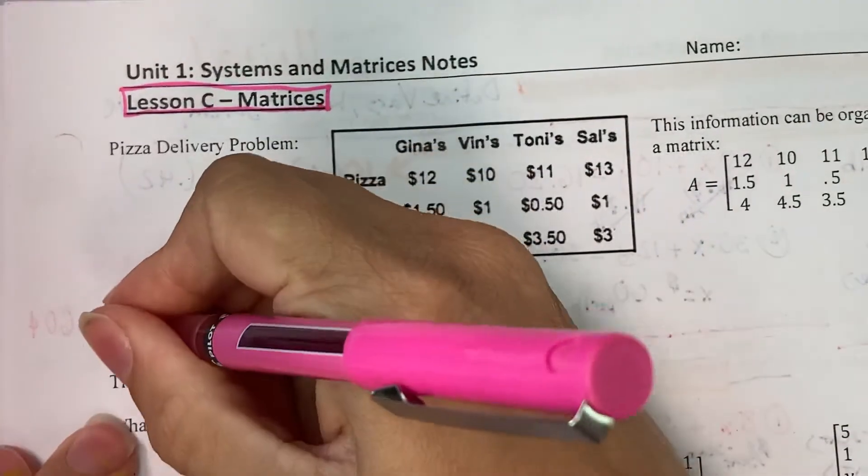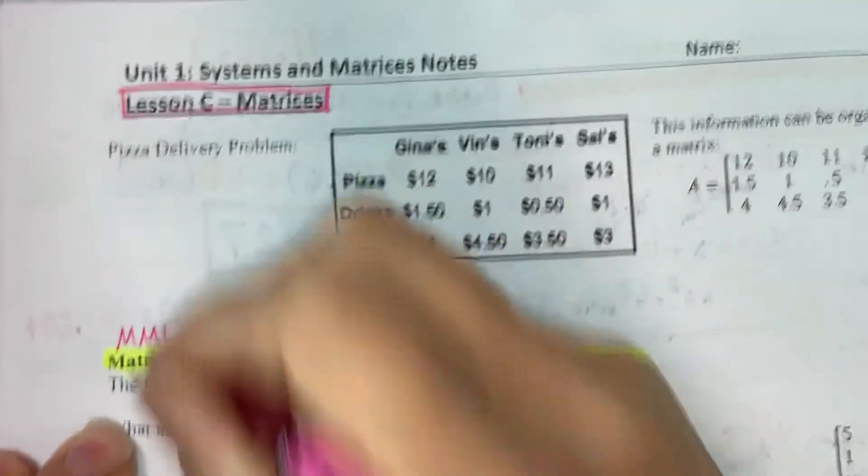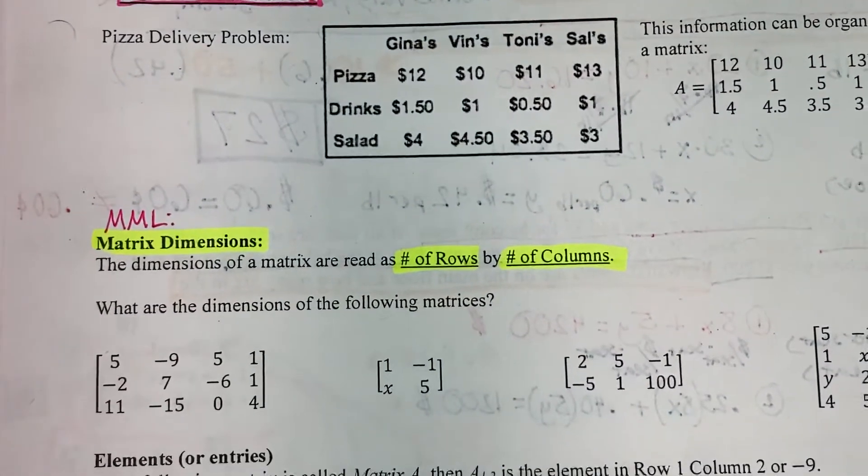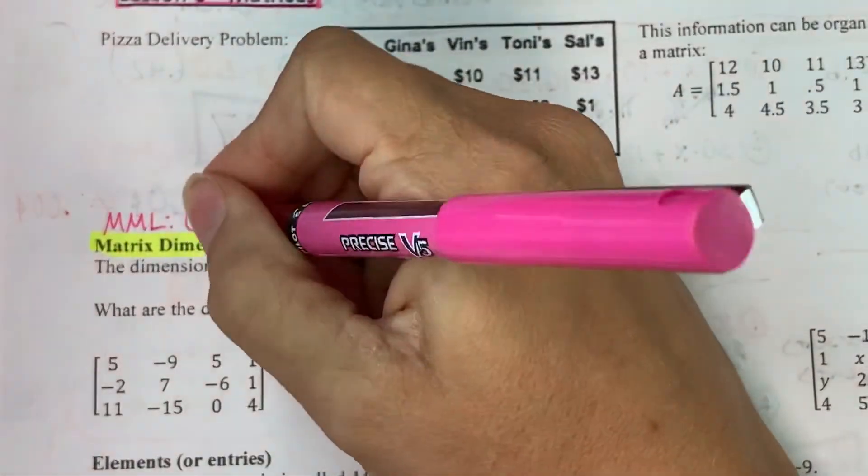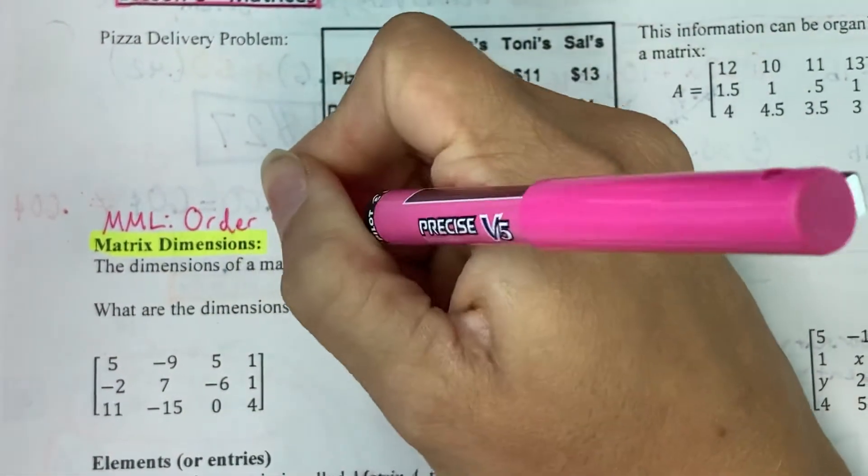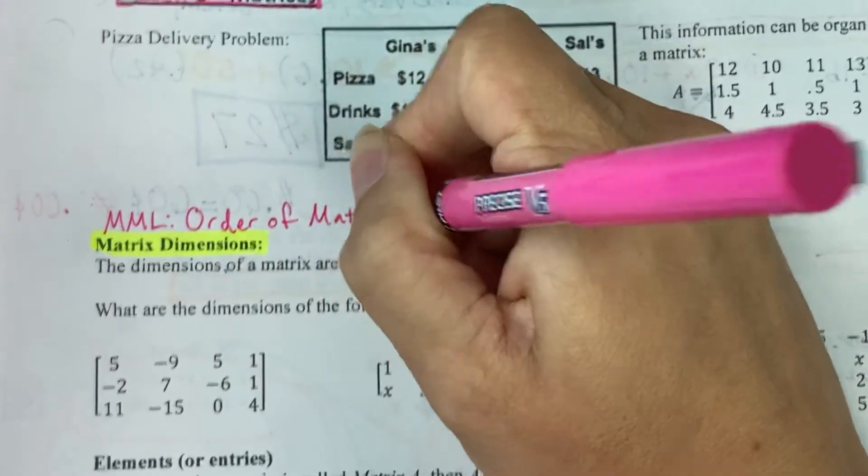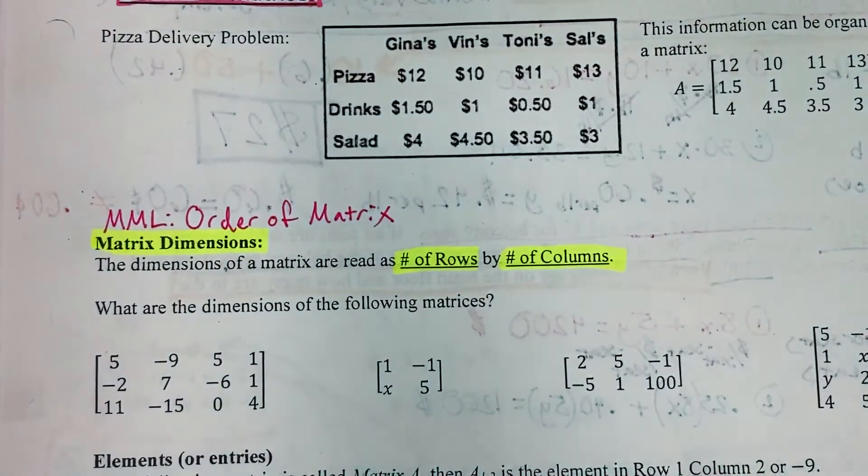And FYI, on my math lab, MML, they refer to the matrix dimensions as the order of a matrix. So the order and the dimensions are the same thing.